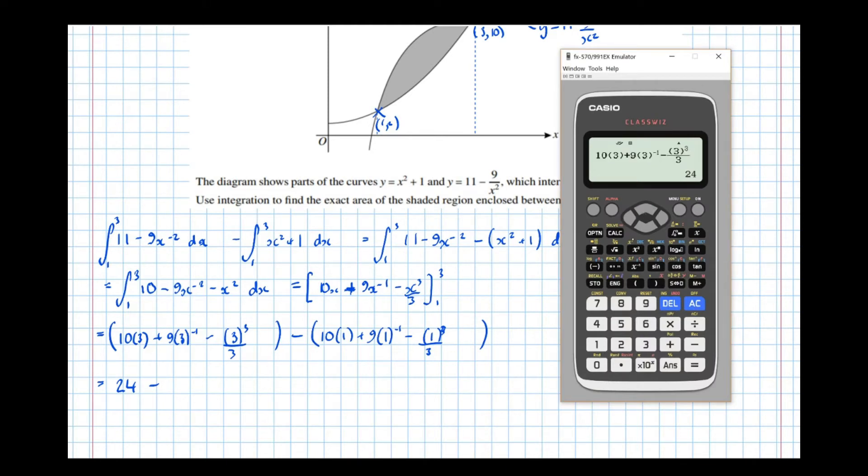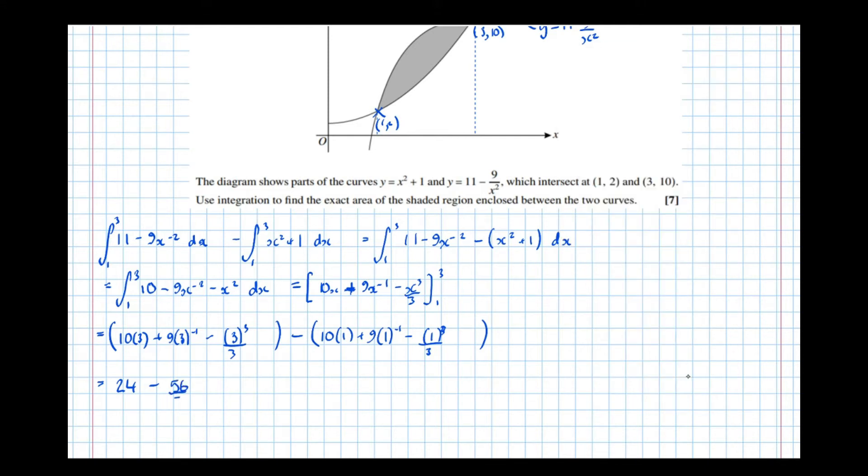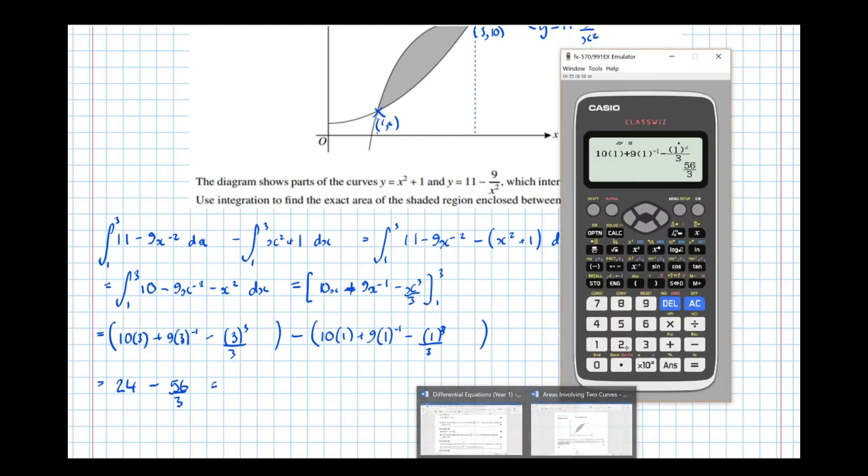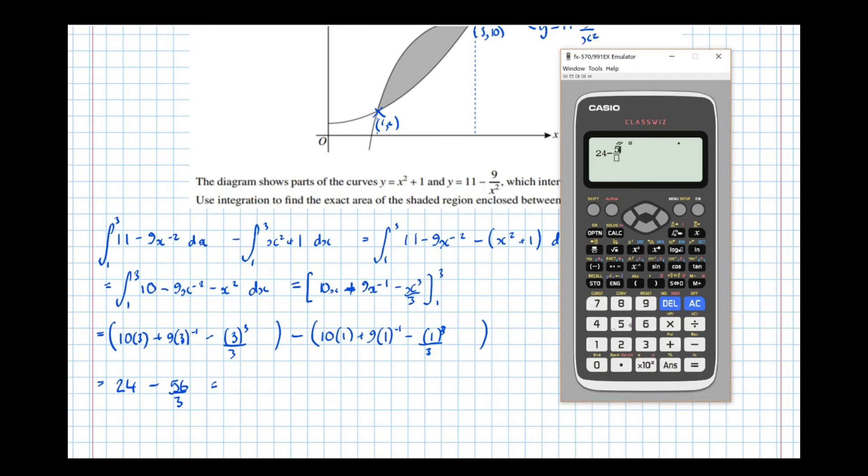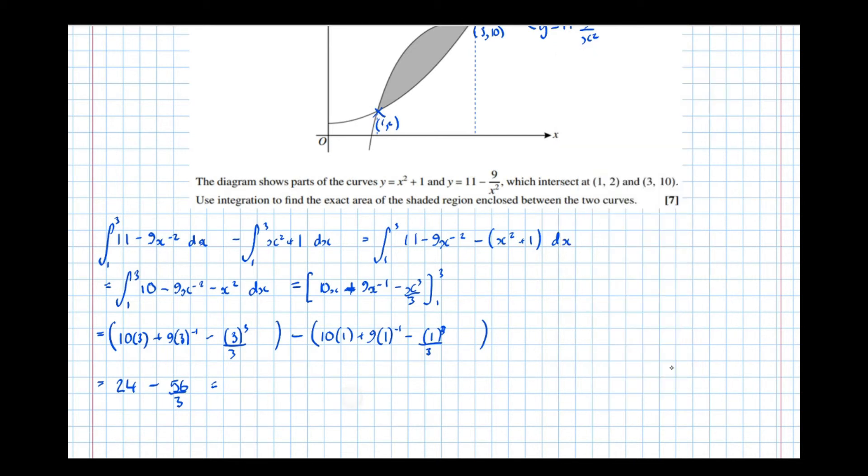So, actually, if I recall that working there, I can just replace all the 3s in the brackets with 1s. This gives 56 over 3, which is equal to, so 24, take 56 over 3, is equal to 16 over 3. And there's our answer.